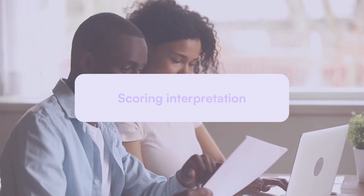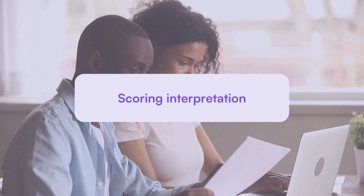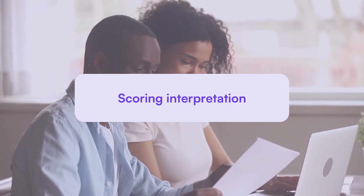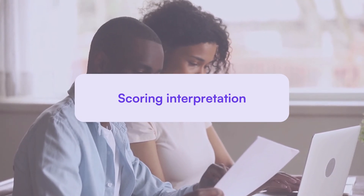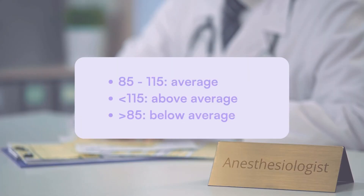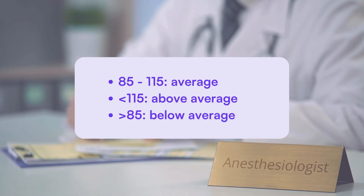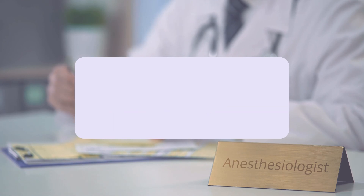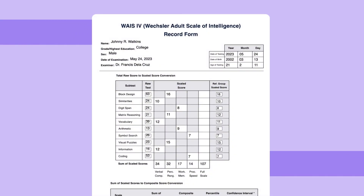The scale scoring provides a comprehensive assessment of cognitive abilities with four main index scores. It also includes a full-scale IQ score representing overall intellectual ability based on all subtests. The standard scoring scale has a mean of 100 and a standard deviation of 15, where scores between 85 and 115 are average, above 115 are above average, and below 85 are below average. Additionally, the scale offers composite scores for specific cognitive domains and subtest scale scores, providing detailed insights into cognitive strengths and weaknesses.